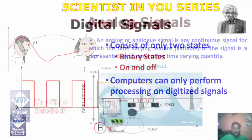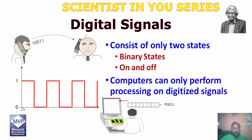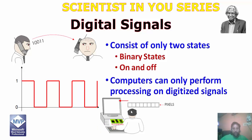Whereas for digital signals, it has two discrete values — either 0 or 1, off or on. For computers to store and perform processing, we need digital data.